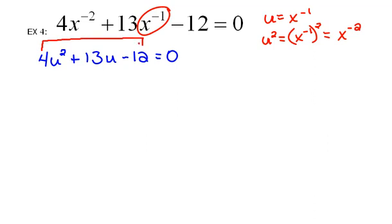If I multiply the first times the last terms, then that would be 4 times negative 12 gives us a negative 48, and then I can think of factors of negative 48 that would give me a 13.